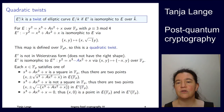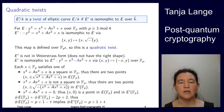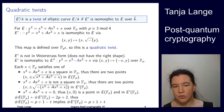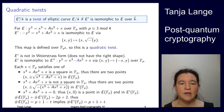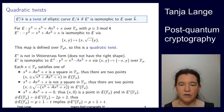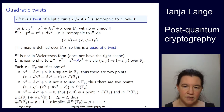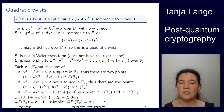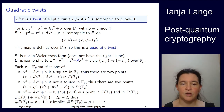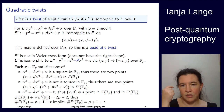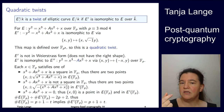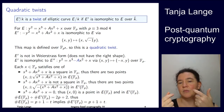Each of these curves also has the point at infinity, so the sum of the orders is 2p + 2. If we write the order of E as p + 1 − t, then the order of the twist is p + 1 + t. So this is another property of a quadratic twist: if you write the curve order as p + 1 − t, then the twist has p + 1 + t.